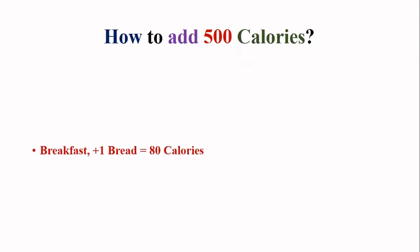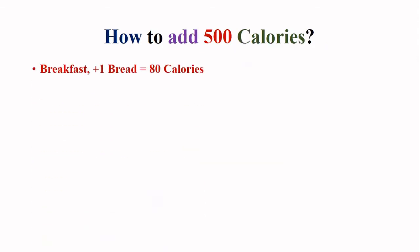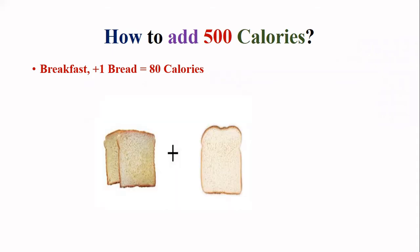The simplest way to add 500 calories to your total daily intake — for example, in breakfast, if you are taking 2 slices of bread per day, start taking 3. Adding 1 extra slice of bread in breakfast will add 80 calories.